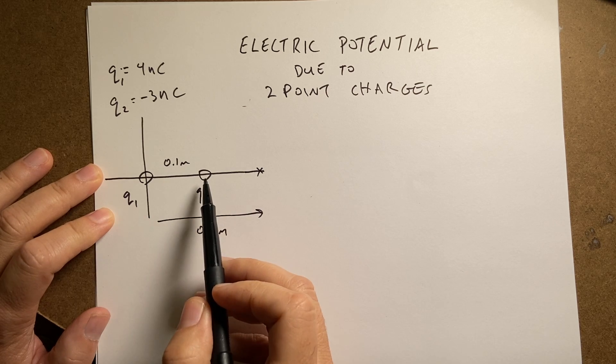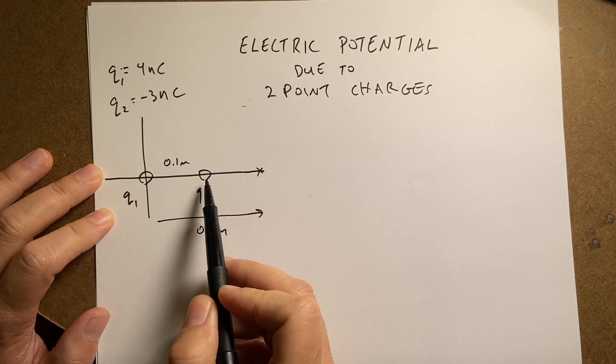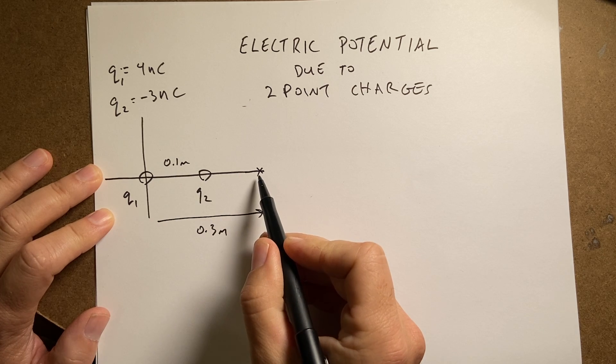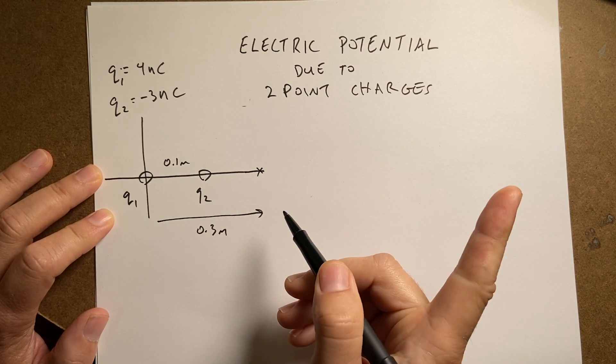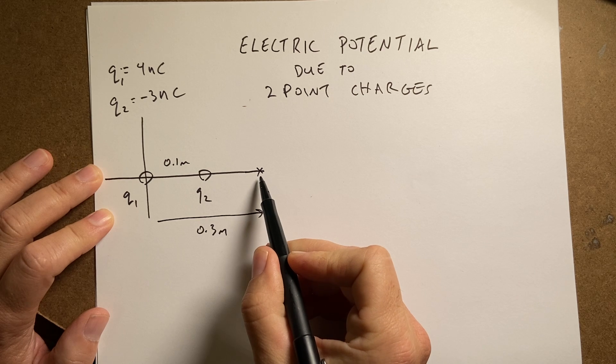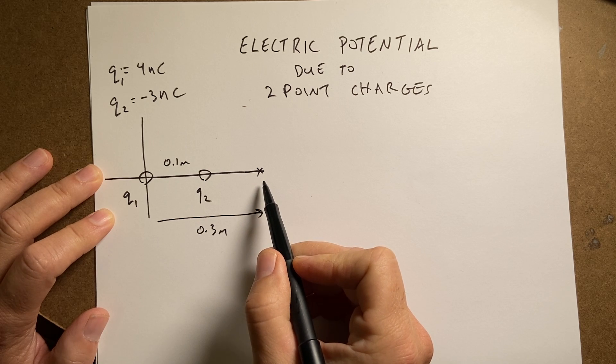And I put Q1 at the origin, I put Q2 along the x-axis 0.1 meters away, and I want to find the electric potential with respect to infinity right here, 0.3 meters from the origin.